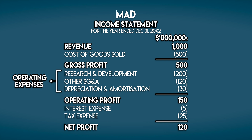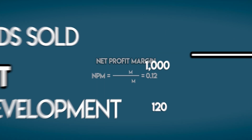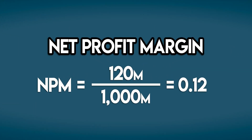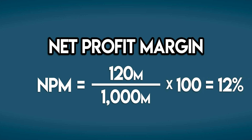How do we work out MAD's Net Profit Margin? We'll start with revenue — MAD earned $1 billion during the course of the year. And on the bottom line, we can see that they generated $120 million in net profit after deducting all of their expenses. So MAD's Net Profit Margin is $120 million divided by $1 billion, which means they generated $0.12 of net profit on each dollar of revenue — that's 12% if we multiply by 100.